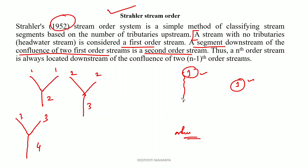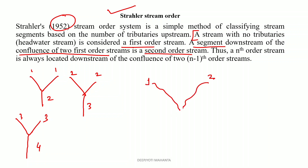Now, one question arises: if a first order stream and a second order stream meet, what will happen? If they meet at a point, then what will the next stream be called — first order, second order, or third order? When a first order and a second order stream meet, the second order stream is the bigger one, so the resultant stream will be second order.